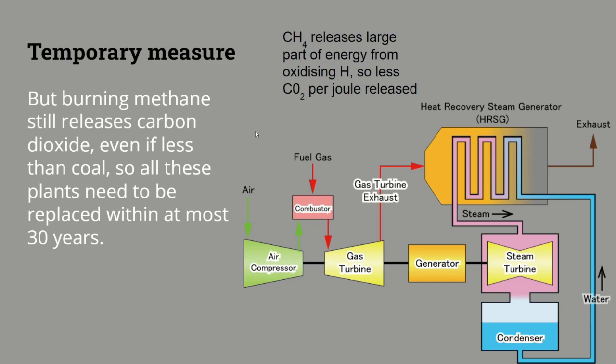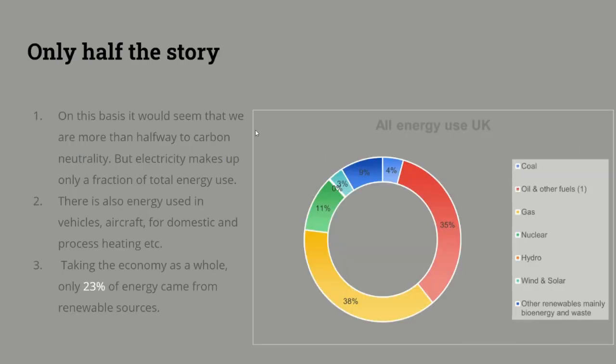All fossil fuel emissions have to be replaced. Electricity is only half the story — if we were just dealing with electricity, we would be more than halfway to carbon neutrality. But electricity makes up only a fraction of total energy use. There's also energy used in vehicles, aircraft, domestic heating, process heating, and so on.